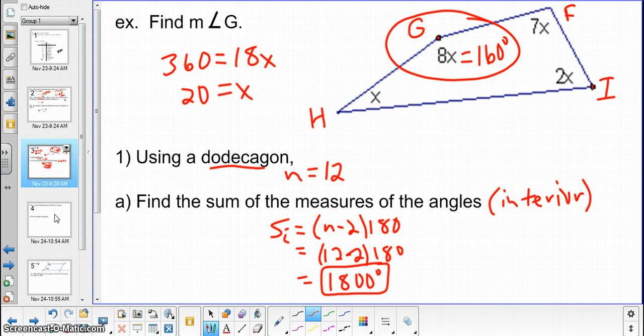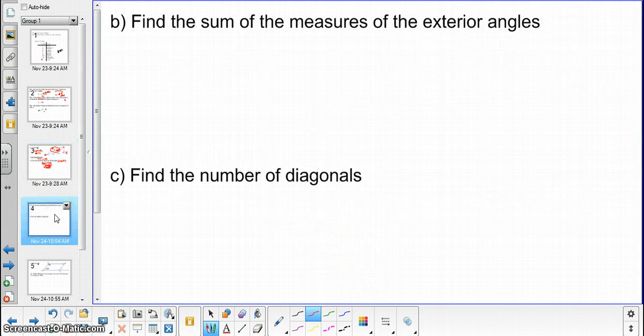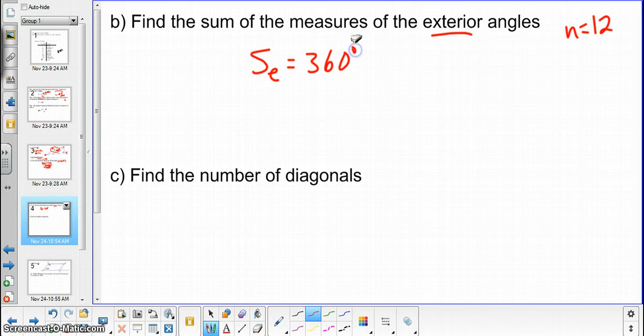Still using a dodecagon for part B and C. So n equals, again, 12 sides for these. Now we're trying to find the sum of the measures of the exterior angles. And this simply would be 360 degrees.